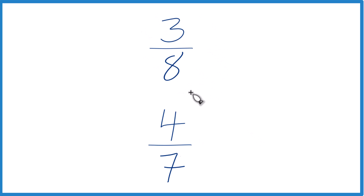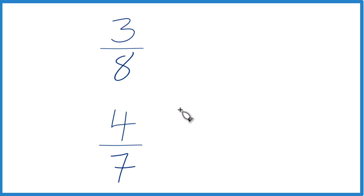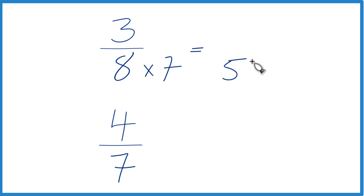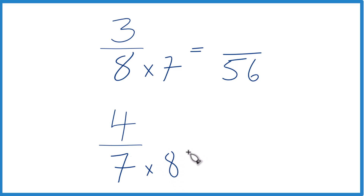You could also find a common denominator, so that we'd have the same denominator for both of these, and we could just compare the numerators. Let's do that. We'll multiply 8 times 7, which gives us 56 as our denominator. Then down here, let's multiply 7 times 8, which equals 56 as well.